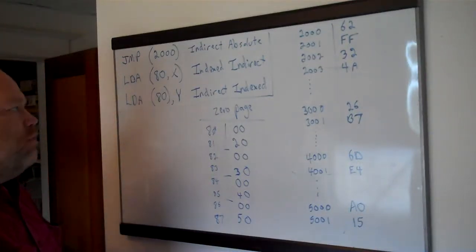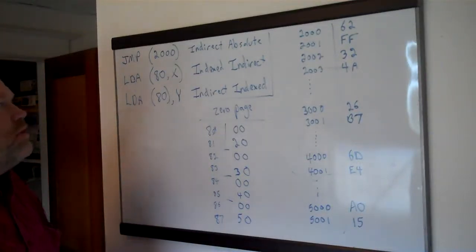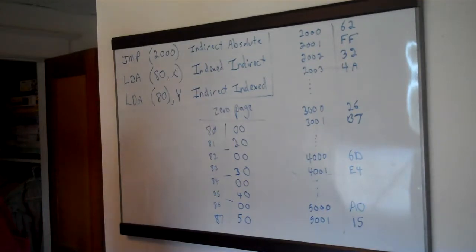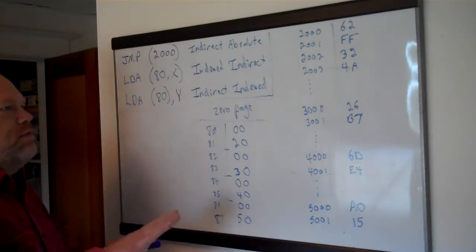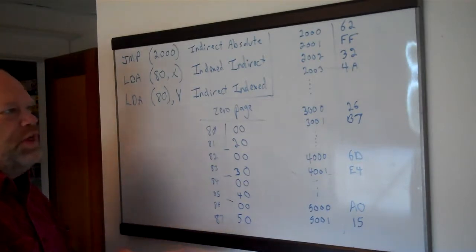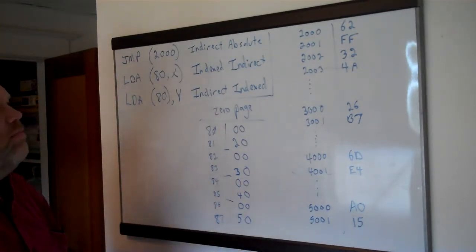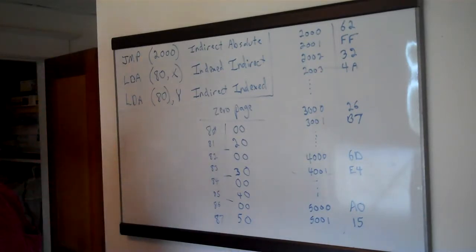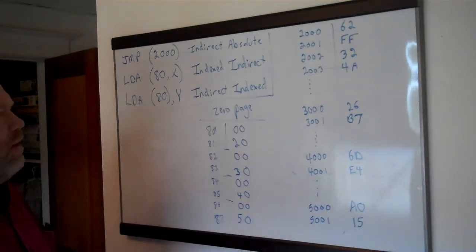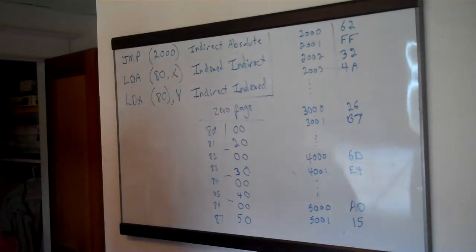Hello and welcome to 6502 Assembly Language Programming. Today I'm going to talk about indirect addressing methods. I covered these in the video on addressing methods overall, but I've had a couple of questions about the indirect ones because they're more difficult than the others, and I thought I'd just draw them out visually here and see if we can make a little more sense of them.